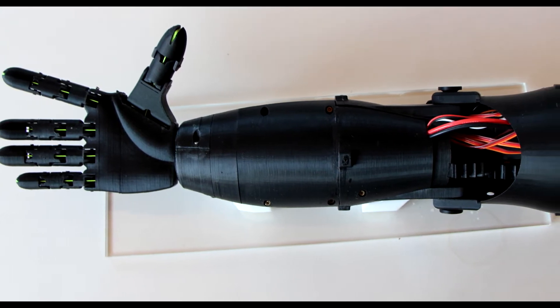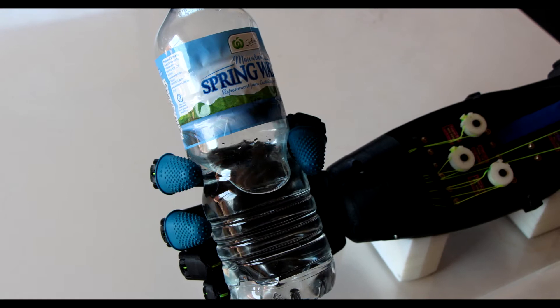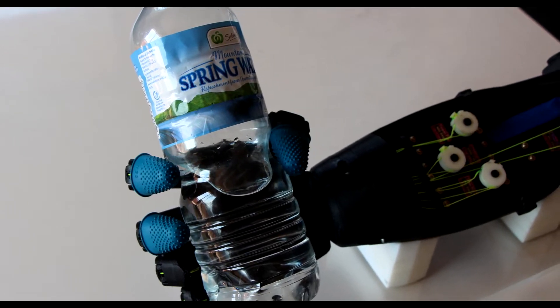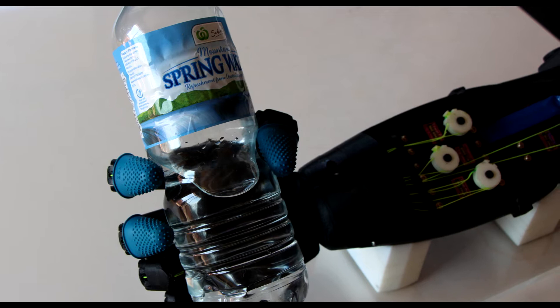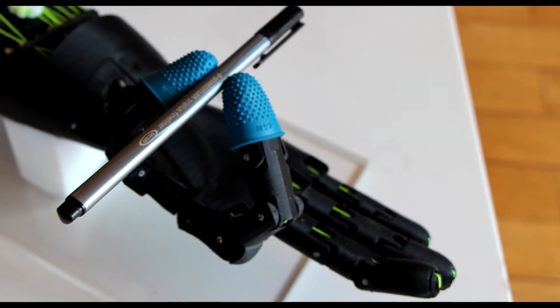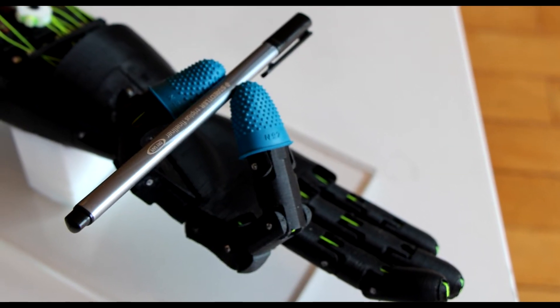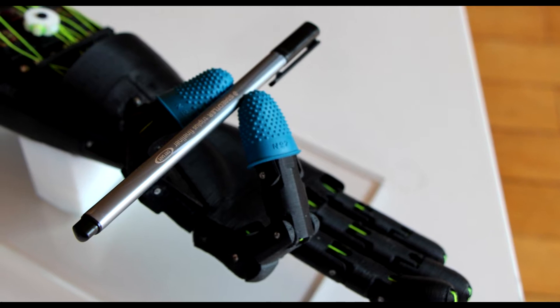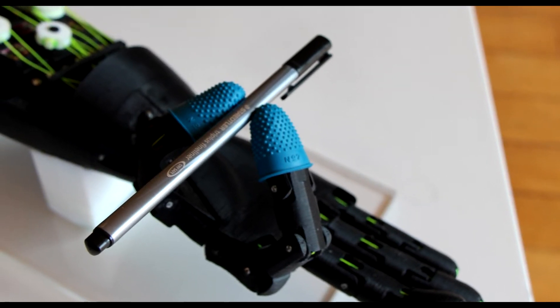The second issue was that the thumb only had one degree of freedom. So it could only open and close in one direction and didn't have much mobility. In this image here you can see the thumb and the index finger holding a pen, but this wouldn't be possible between the thumb and the large finger or ring finger for example.